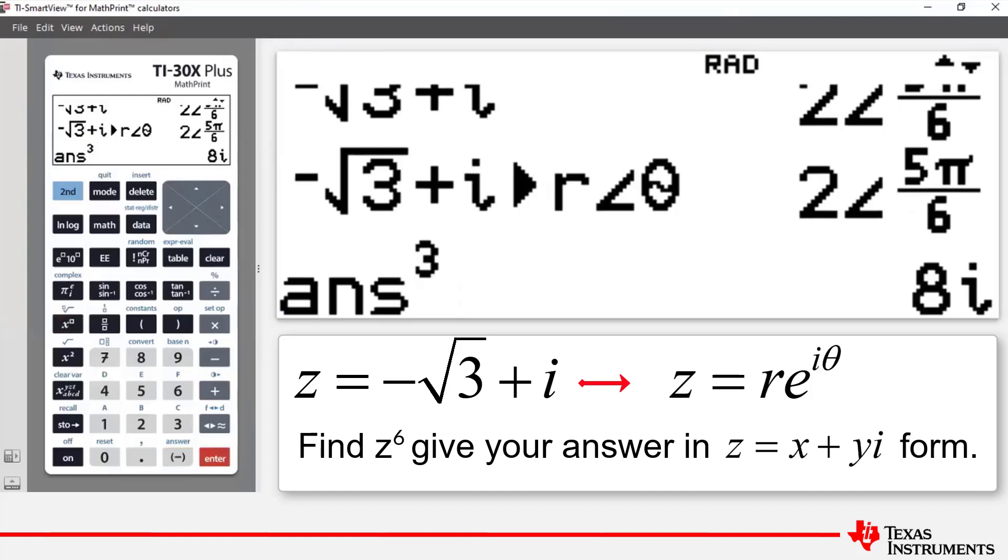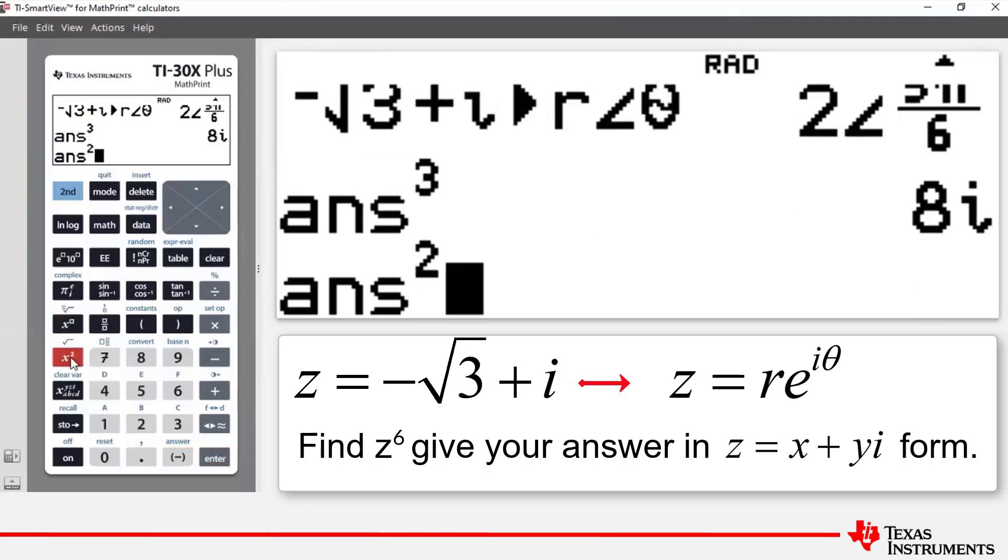Now, to get from z cubed to z to the 6, all we need to do now is to square that answer. So we press the x squared button. So it's going to take our previous answer and square it. Press enter. And so we find there that z to the power of 6 is equal to negative 64.